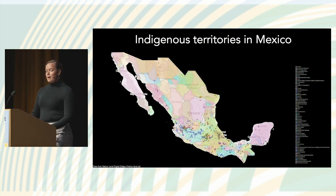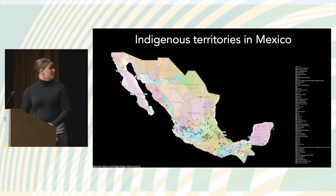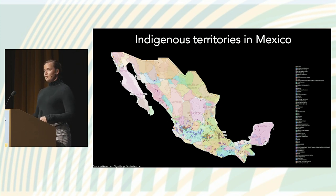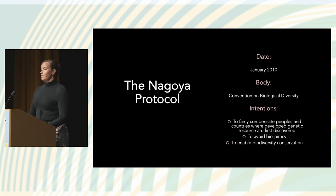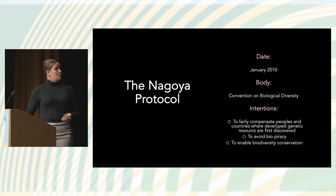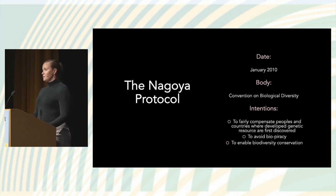Here I'm showing you a map of the current indigenous territories in the country of Mexico — over 200 indigenous groups on this map, from Native Land Digital, which I encourage you to check out. Most of the species and peoples I mentioned are from central Mexico, and many of these species are widely distributed across the country, with archaeological evidence suggesting these practices are very ancient. A few words on the Nagoya Protocol: this international agreement signed by many countries necessitates the compensation of peoples and knowledge sources, with the goal of avoiding biopiracy and enabling conservation. We need to think about how to compensate the peoples where these genetic resources are from.